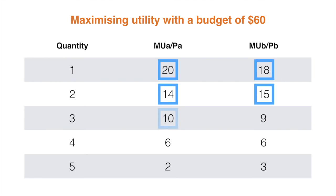Fifth, I will consume a unit of Product A for $5. Sixth will be a unit of Product B for $10. Seventh, I am indifferent between Product A and Product B, but I will choose Product A for $5. I still have $10 left and that will be spent on a fourth unit of Product B. I have now spent my entire $60 and maximized my utility. I purchased 4 units of each.